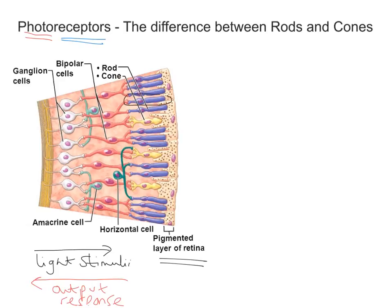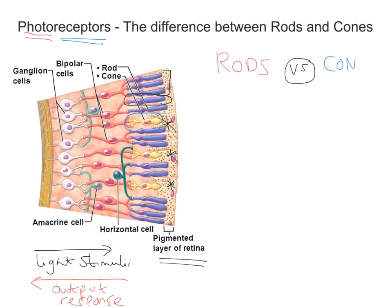The rods are these ones highlighted slightly in purple, and the cones are these ones in yellow on this diagram. We're going to outline the difference between these two photoreceptors and explain why you get a cluster of rod cells, whereas the cone cells — where I've put these asterisks — tend to be found individually, and what the significance of that is. We're going to make a table of differences: rods versus cones.